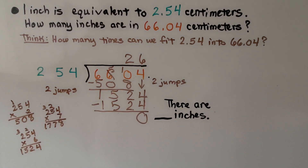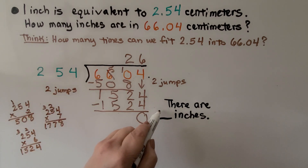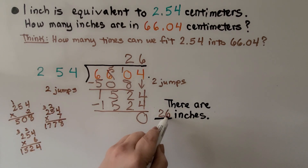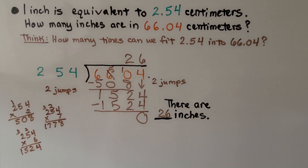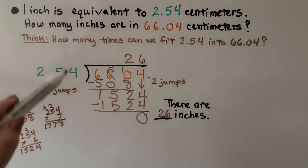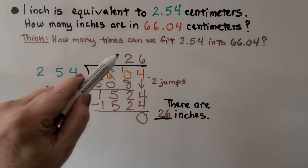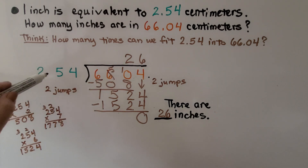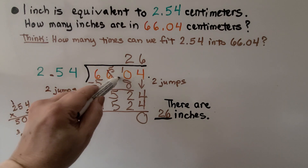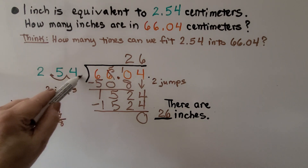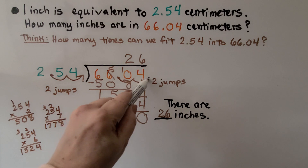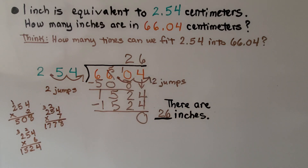So we see that there are 26 inches in 66 and 4 hundredths centimeters. In the last video, when this was a whole number and this was a decimal number, we just brought the decimal point straight up. But because both this and this were decimal numbers, we had to move it first, then we did our division. Big difference.